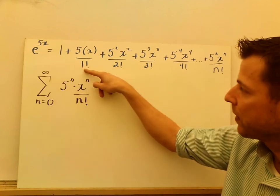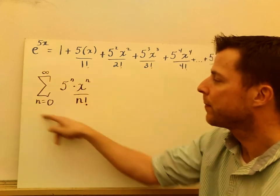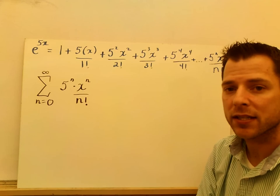So look, 0 term, 1st term, 2nd, 3rd, 4th, 5th, and so on. So that's the sum that represents e^(5x).